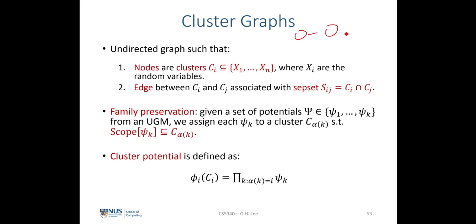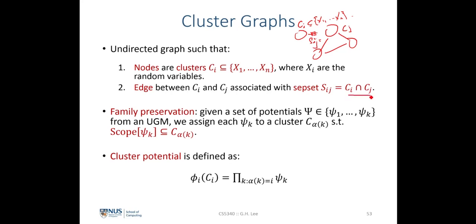Each cluster, which we call ci, consists of a subset of the random variables x1 to xn from the joint probability distribution. The edge between two clusters ci and cj is associated with what we call a subset, denoted as sij, which equals the intersection of ci and cj. This means it contains the random variables that overlap between cluster i and cluster j in the cluster graph. We also define the family preservation principle.